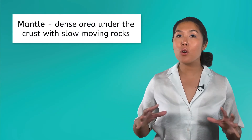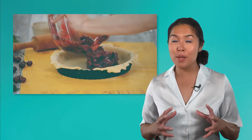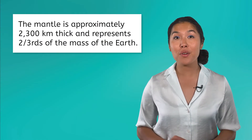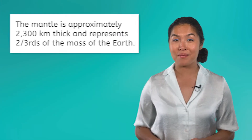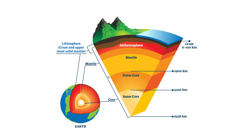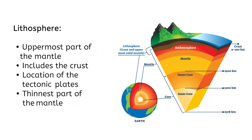While the crust only represents one percent of the earth's mass, the layer below it, the mantle, is much thicker. The mantle is dense and made of slow moving rocks, kind of like the ooey gooey but yummy filling of our cherry pie. The mantle is approximately 2,300 kilometers thick, and represents around two-thirds of the mass of the earth. The mantle can be further divided into three sections: the lithosphere, the asthenosphere, and the mesosphere. The lithosphere is the top part of the mantle, but also contains the crust. It is where the tectonic plates are located, and is the thinnest part of the mantle.